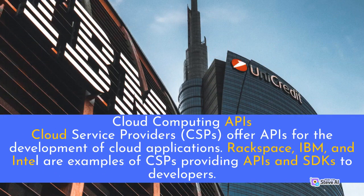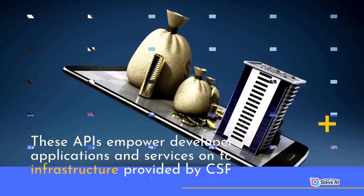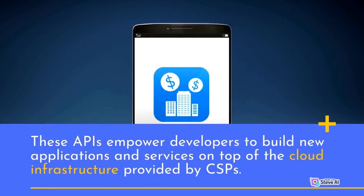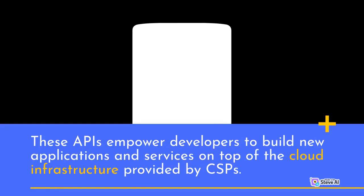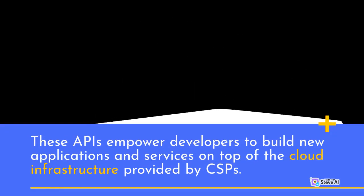Cloud Computing APIs: Cloud Service Providers, CSPs, offer APIs for the development of cloud applications. Rackspace, IBM, and Intel are examples of CSPs providing APIs and SDKs to developers. These APIs empower developers to build new applications and services on top of the cloud infrastructure provided by CSPs.